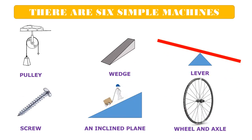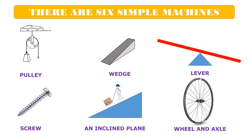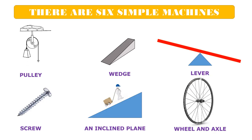There are six simple machines: Pulley, Wedge, Lever, Screw, an inclined plane, and wheel and axle.